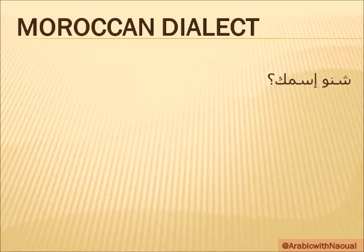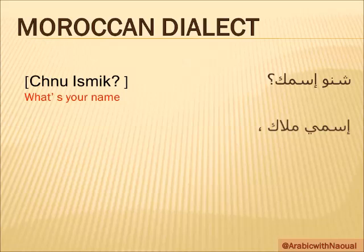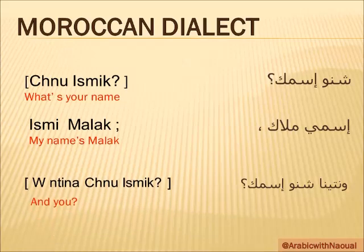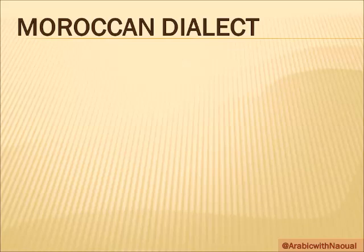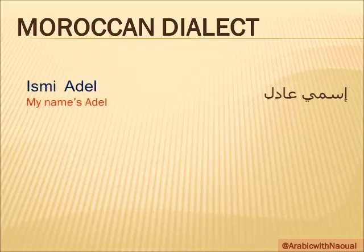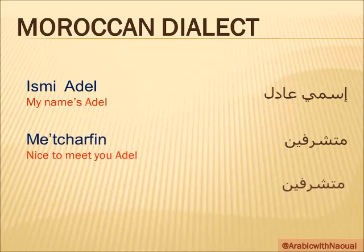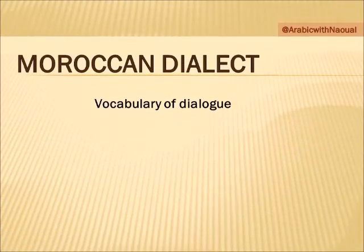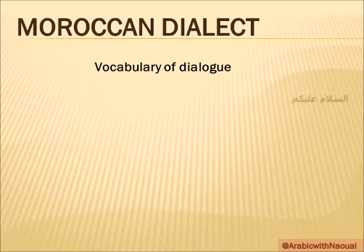Shunno ismek? — What is your name? Ismi Malak — My name is Malak. Wintina, shunno ismek? — And you, what is your name? That is the end of the dialogue.